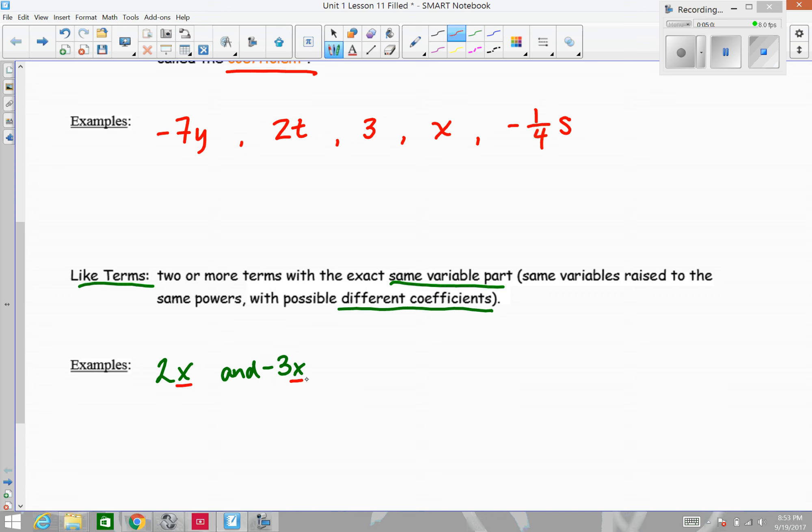Another example would be 18x squared y and 2x squared y. Again, they have the same variable portions with exponents. So x squared y, x squared y, those are like terms.